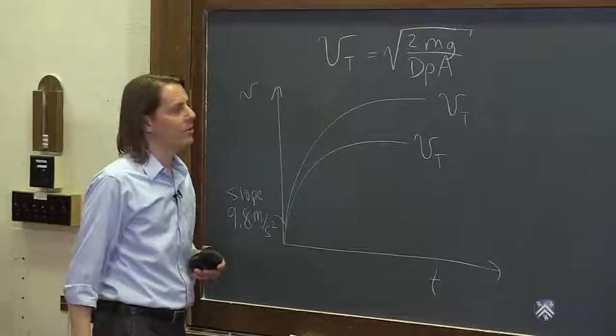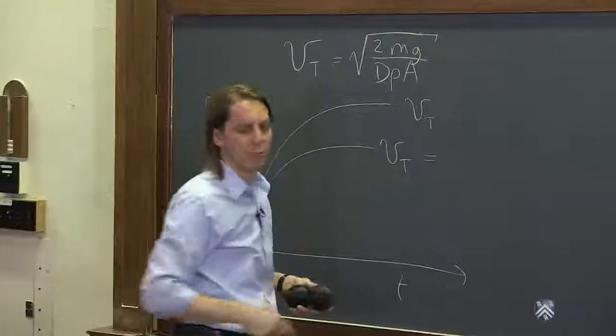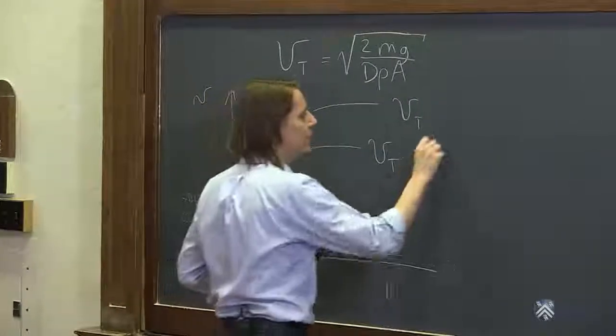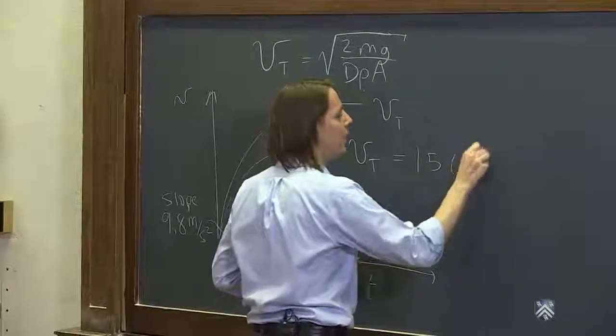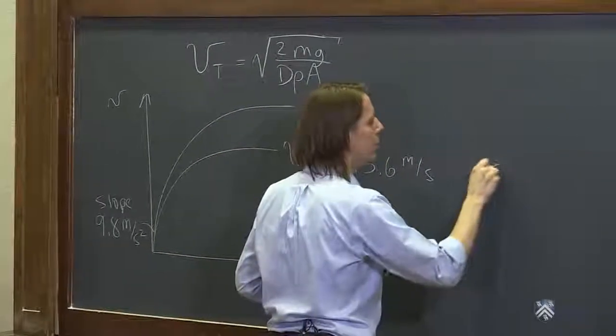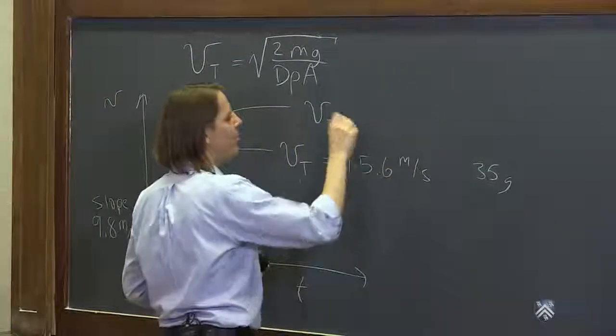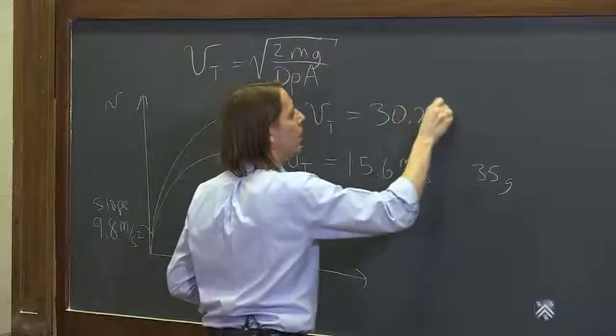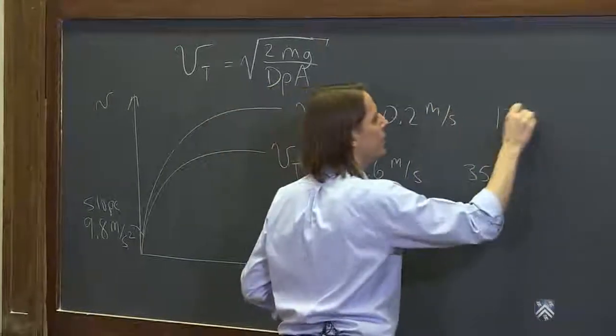And I've actually calculated them just using this formula. For the lighter ball it only gets to about 15.6 meters per second. That's for the 35 gram ball. And the heavier ball gets to about 30.2 meters per second. That's for the 130 gram ball.